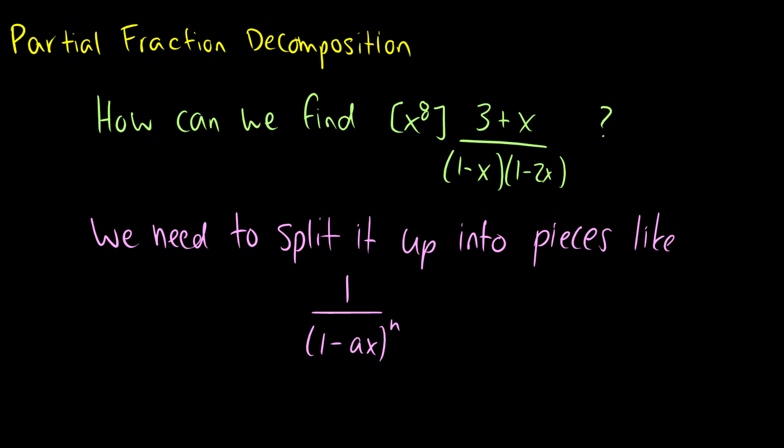So we want to split it up into pieces that look like 1 over 1 minus ax to the n. Well really this 1 can be any coefficient we want, capital A, capital B, so I'm going to show you how to split this up.